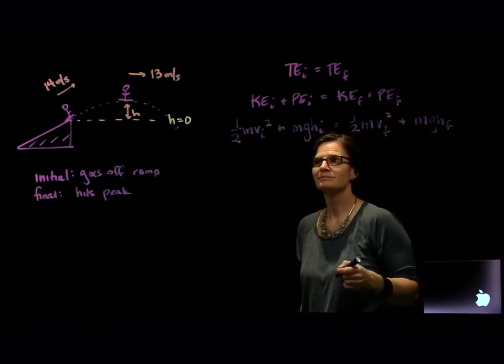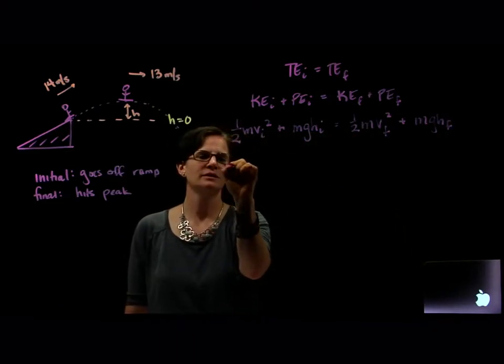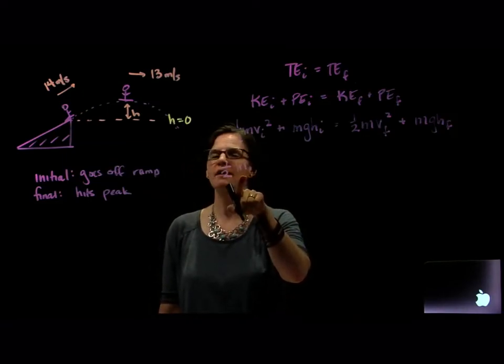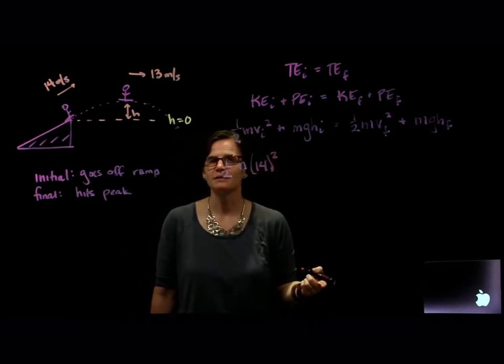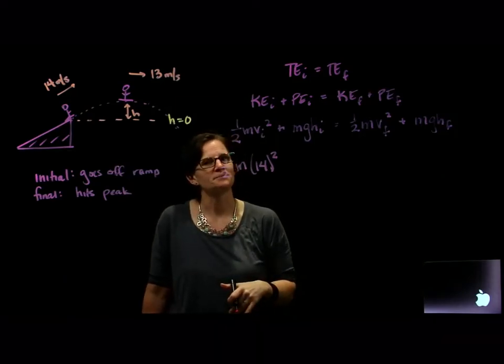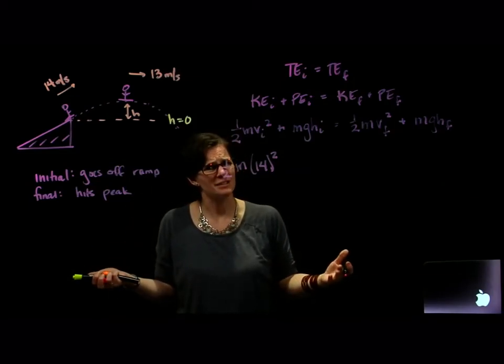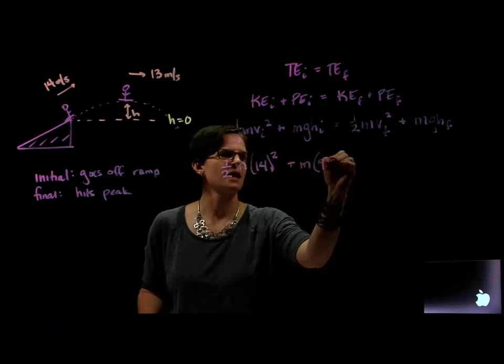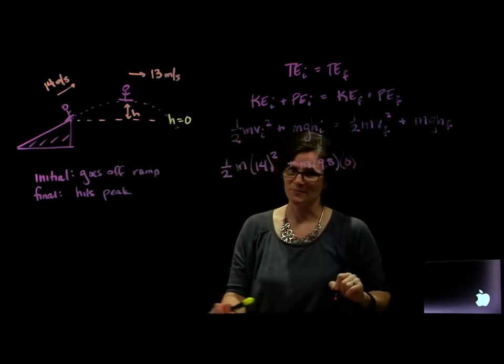All right, well I want that final height. Do I know everything else? Yeah, it turns out I do. One half the mass times the initial speed—well, he's going 14 meters per second. Now this is speed, which kinetic energy cares about. Doesn't matter that he's going off at an angle. He has a certain speed and it's 14 meters per second. So one half the mass times 14 squared plus his mass times G, that's 9.8, and what's his initial height? Oh well, I set that equal to zero. That's going to help us out.